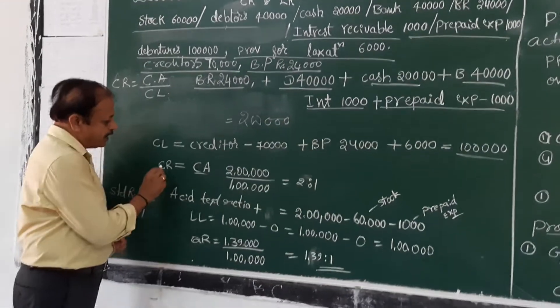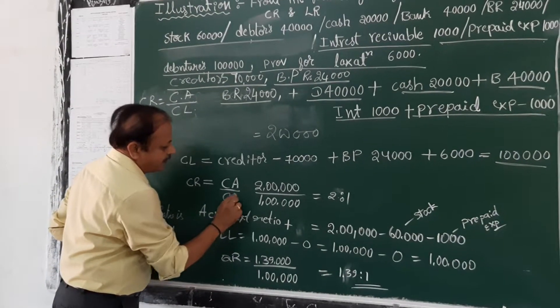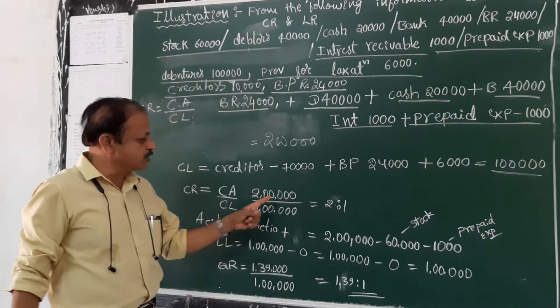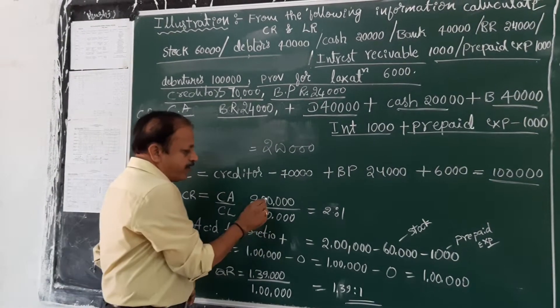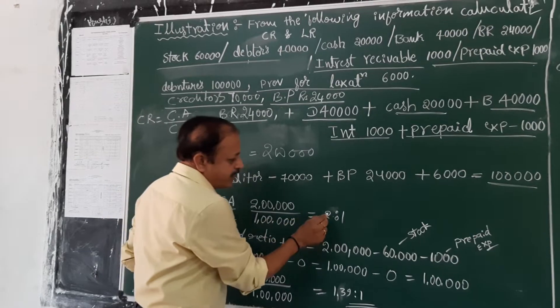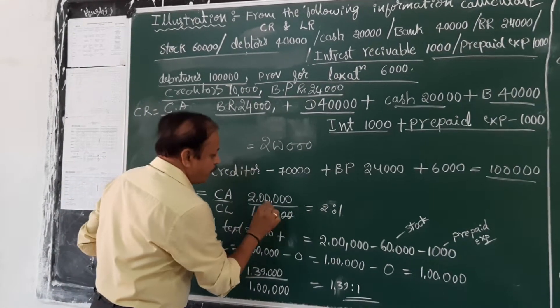Now you apply the formula. Current ratio is equal to current assets divided by current liabilities. Current assets is 2 lakhs, whereas current liabilities is 1 lakh. When you divide 2 lakhs by 1 lakh, you get 2 is to 1.